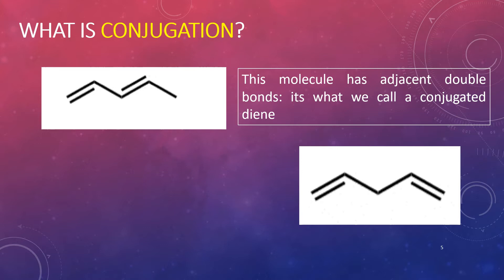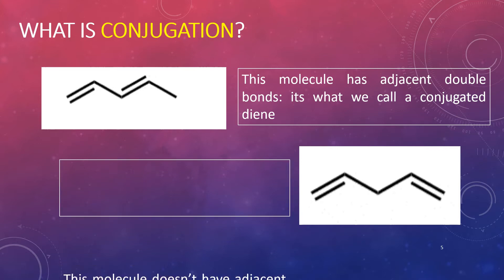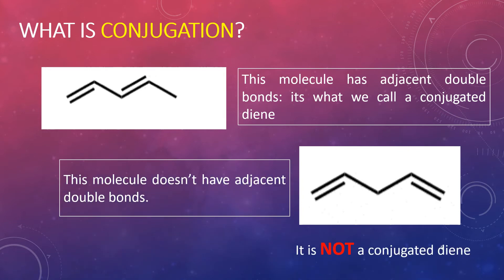But what is the difference between these two structures? In the second structure, the double bonds are not adjacent to each other, and therefore this is not a conjugated diene system.